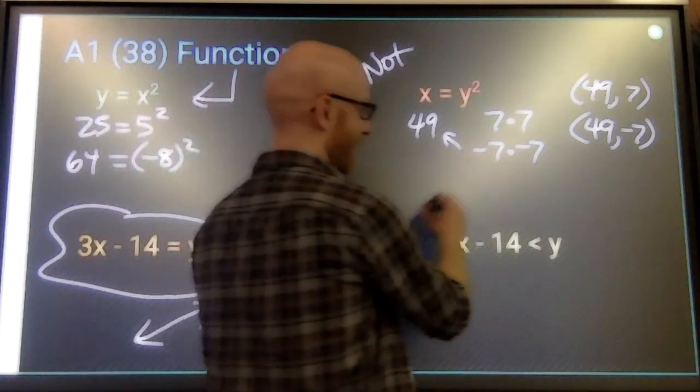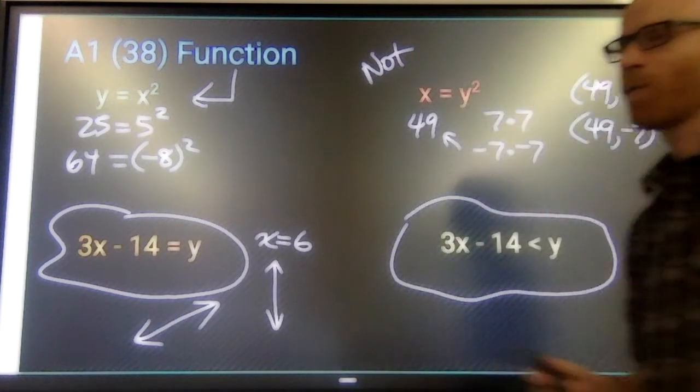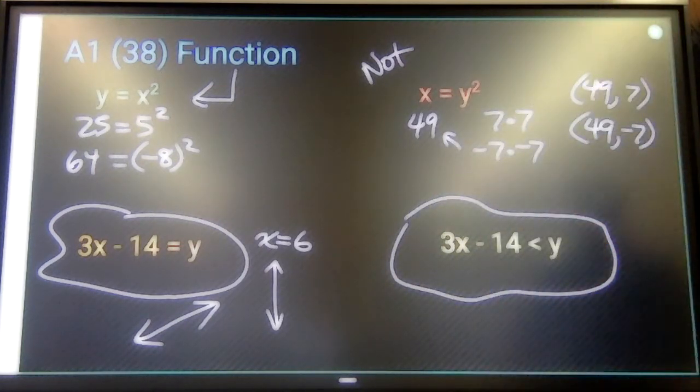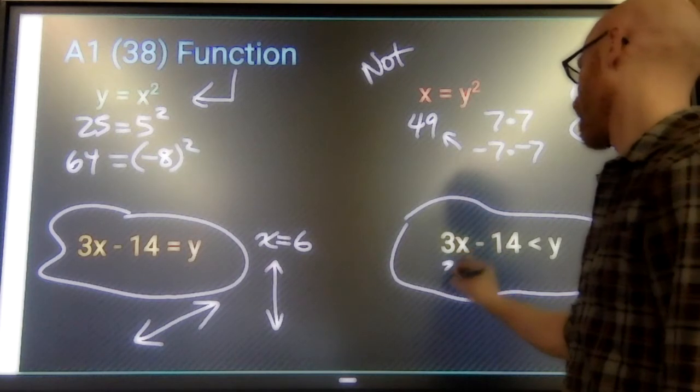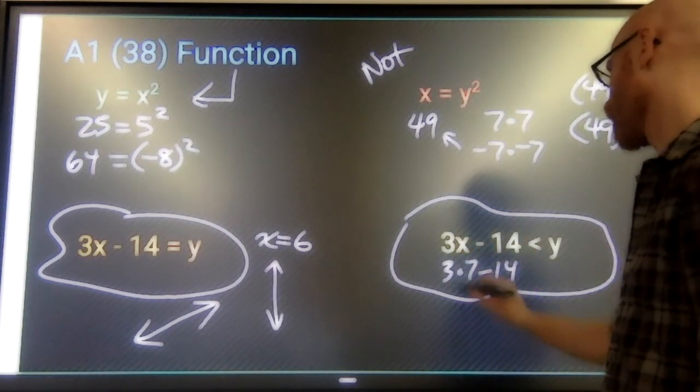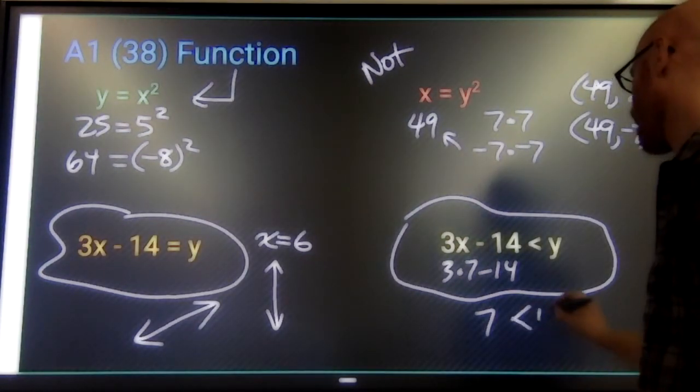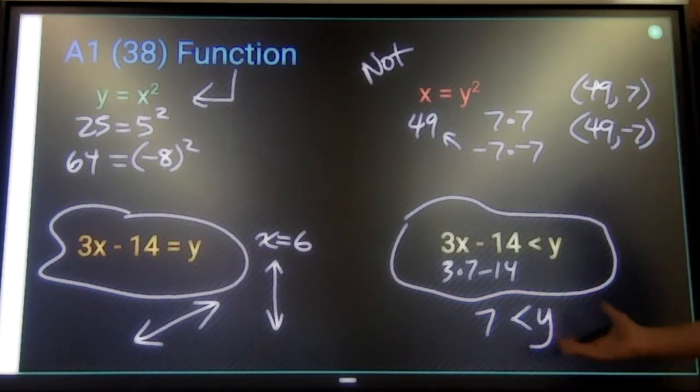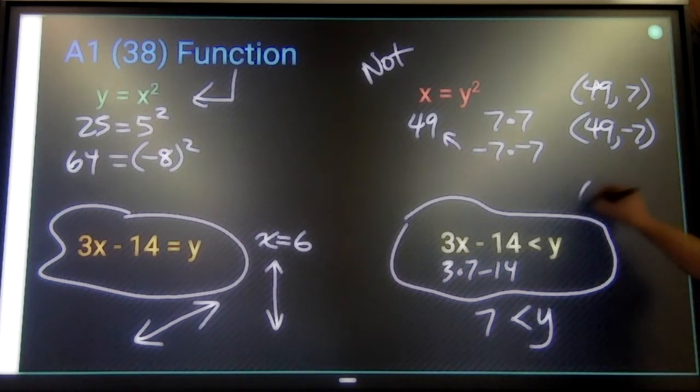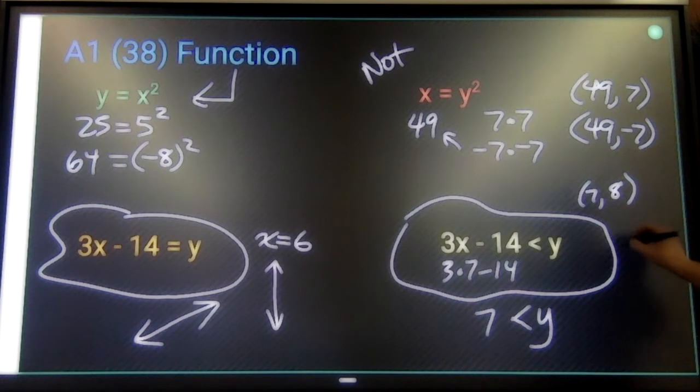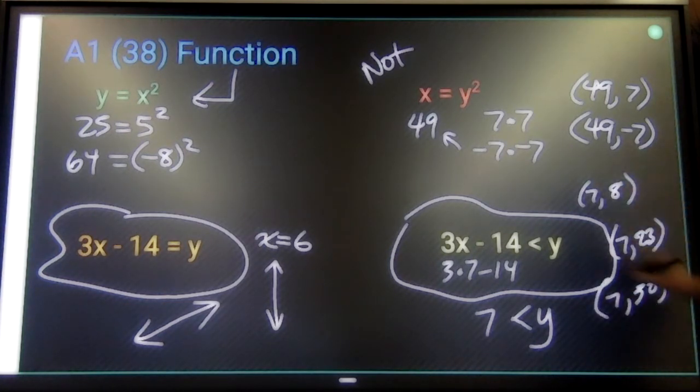Inequality, on the other hand, are very dysfunctional. If I pick x is 7, 3 times 7 minus 14 equals 21 minus 14 equals 7. 7 is less than y. There are a ton of answers that I could put in for y. I could say when x is 7, y is 8. I could say when x is 7, y is 23. I could say when x is 7, y is 50. All these different answers that would make that true means that this is not a functional relation.